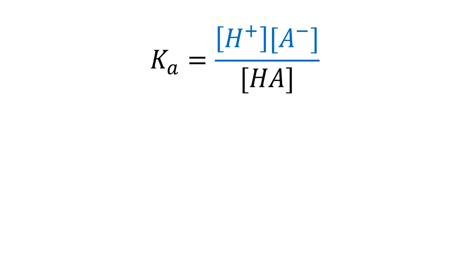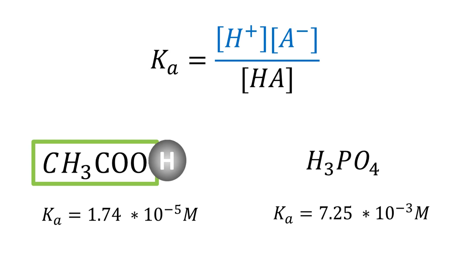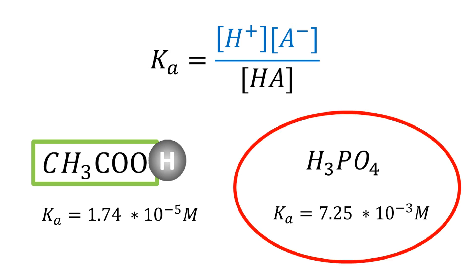On the other hand, weak acids have lower Ka values, and we can compare these values between acids to determine which ones are stronger or weaker. For instance, by comparing the Ka values of acetic acid and phosphoric acid, we can be sure that phosphoric acid is the stronger of the two.